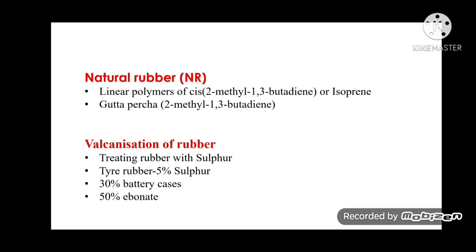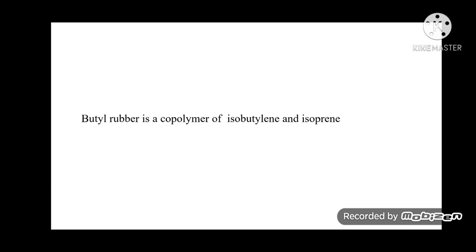Natural rubber (NR) is a linear polymer of cis-2-methyl-1,3-butadiene (isoprene). Gutta-percha is the trans isomer — trans-2-methyl-1,3-butadiene. Vulcanization is the treatment of rubber with sulfur. Tire rubber contains about 5% sulfur; 30% sulfur is used in vulcanization of battery cases and 50% for ebonite. Butyl rubber is a copolymer of isobutylene and isoprene.